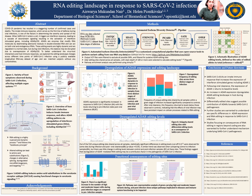Altered RNA editing patterns can lead to amino acid substitutions if that happens in the coding region of a gene. Additionally, it can affect alternative splicing and also interfere with microRNA biogenesis and targeting. An example of such altered RNA editing leading to amino acid substitution is the serotonin receptors, which are important in